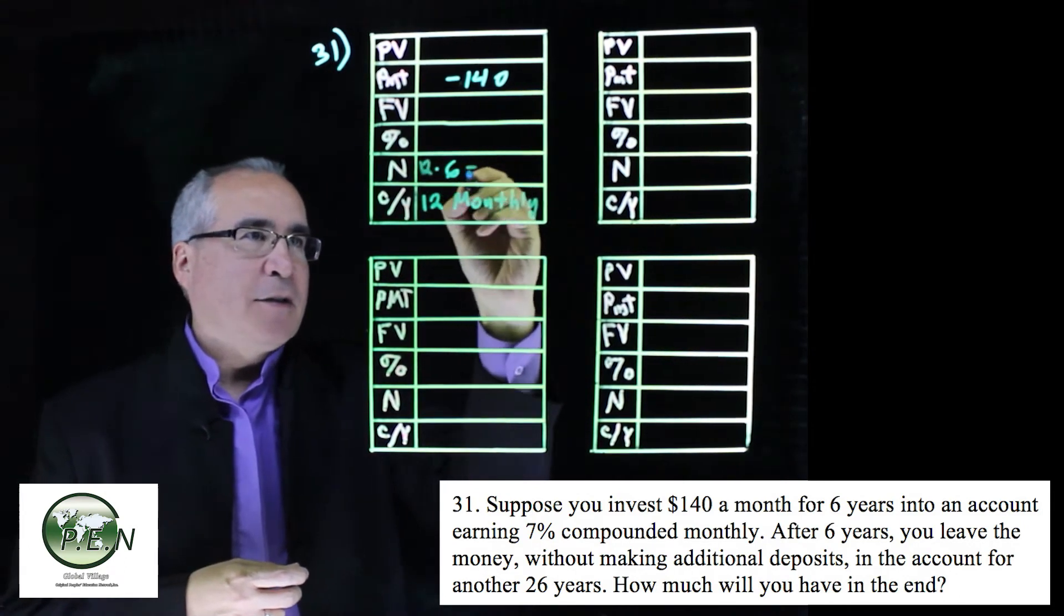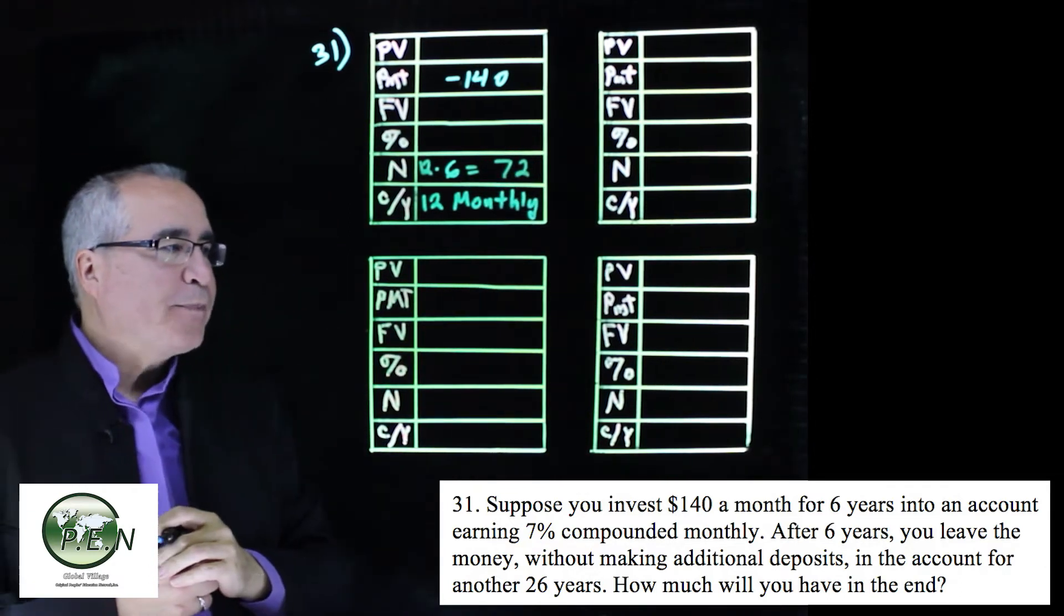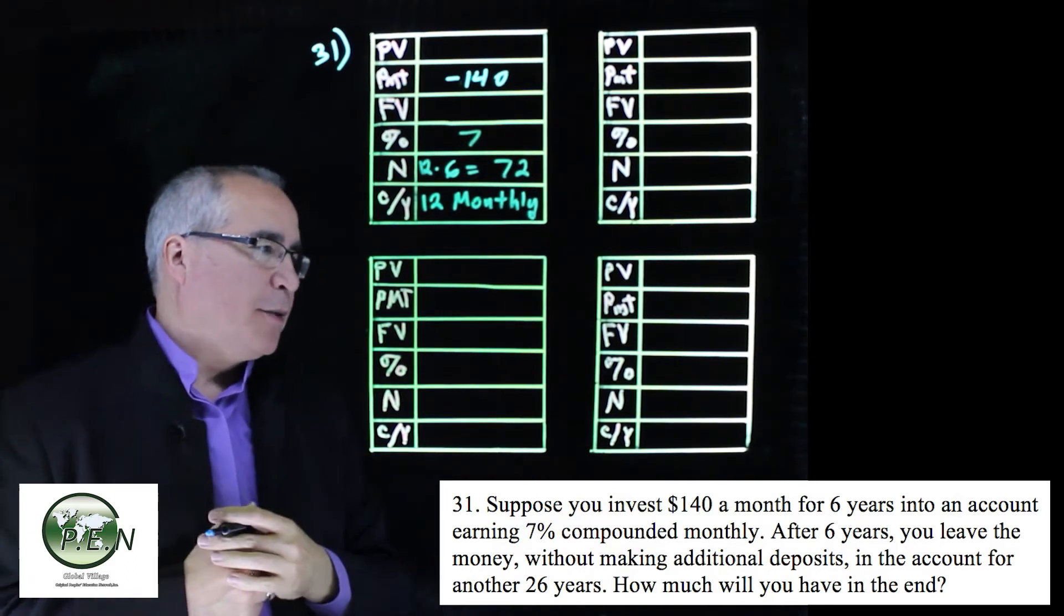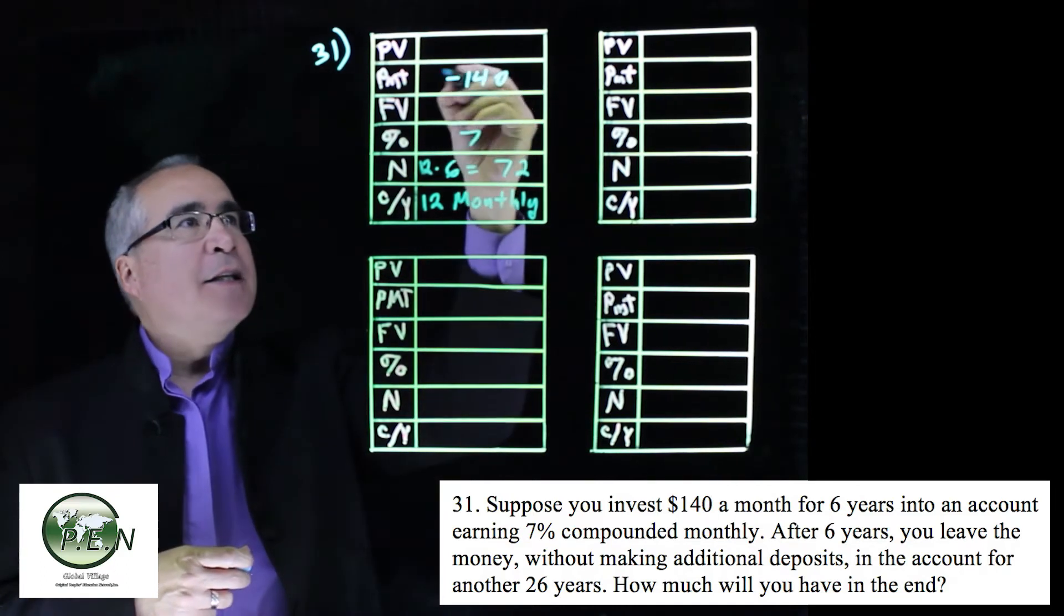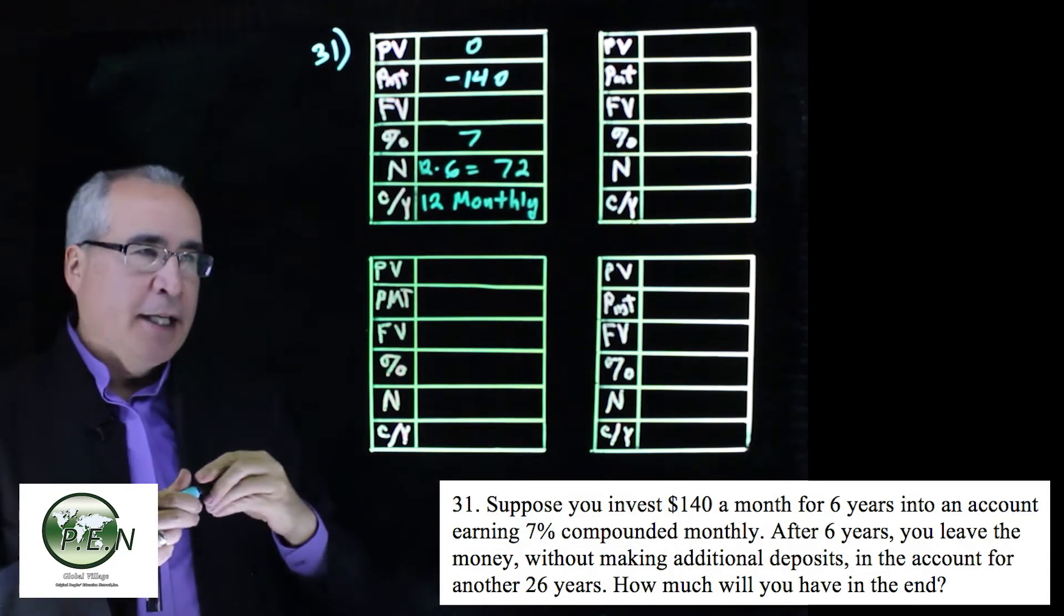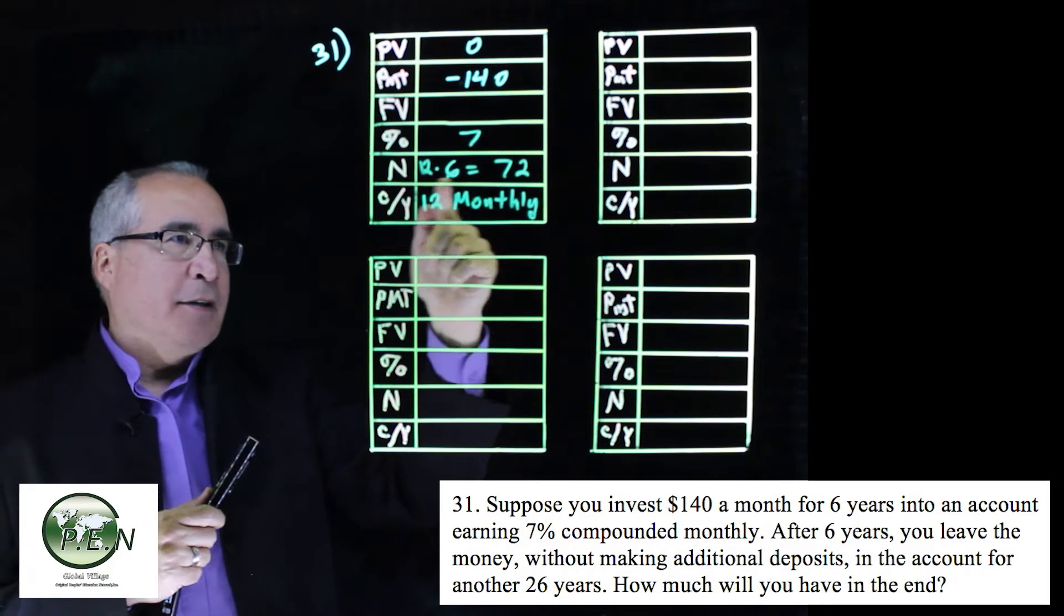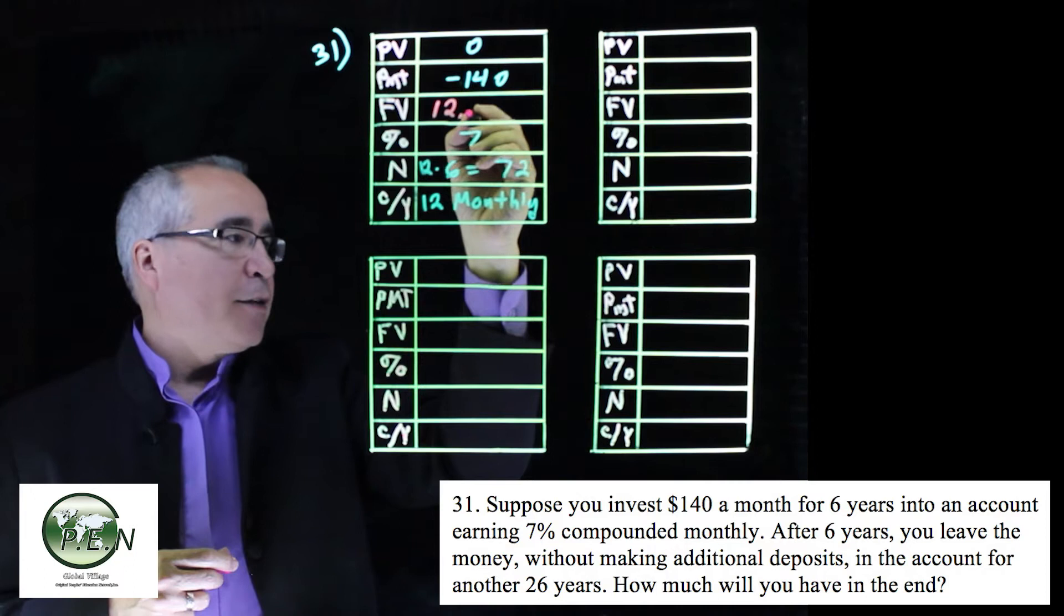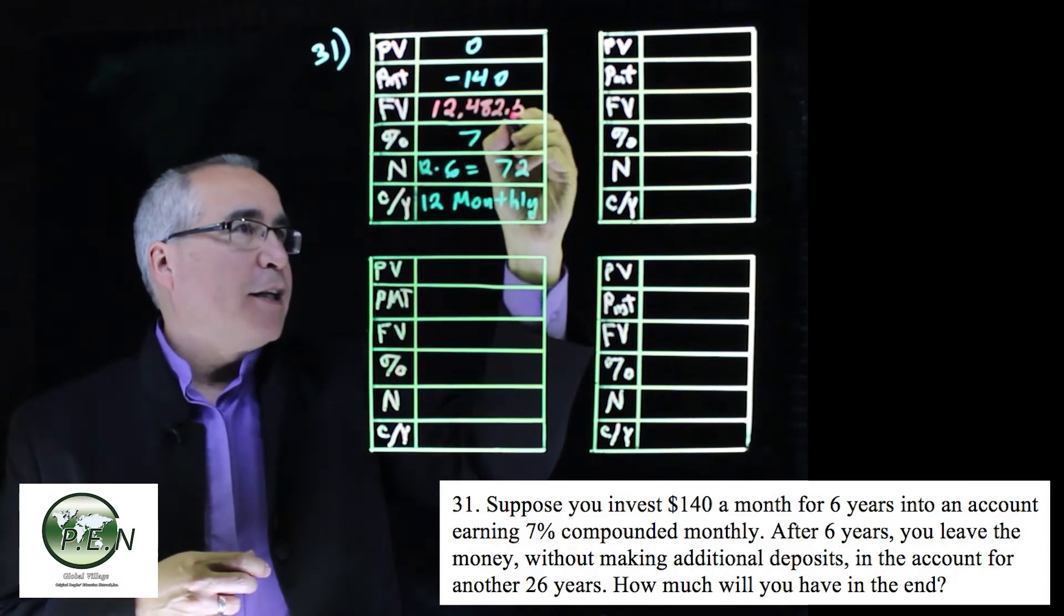That's 12 times 6, which means we're going to have 72 periods. We have 7% compounded monthly, which is good because that's all we can really do. We didn't make an initial deposit; we just start making the payments of $140, so that's going to be zero. We click on the future value key and we find that at the end of the six years we will have saved $12,482.53 in the account.